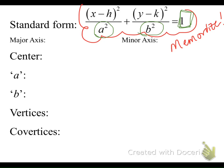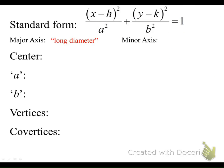A circle has a constant radius all the way around. When we graph ellipses, that circle is going to be squashed into an oval so that you'll have a longer radius in one direction and a shorter radius in the other direction. In an ellipse, we have what's called a major axis, which is the long diameter — a diameter goes all the way across from end point to end point — and we have a minor axis, which is the short diameter.